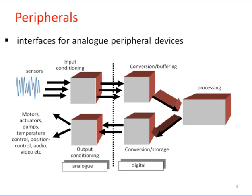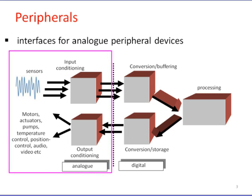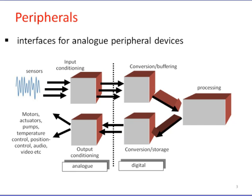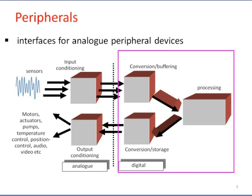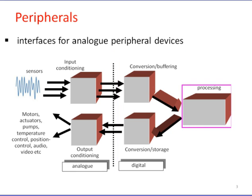Embedded systems receive their inputs from the external world in the form of analog signals whose amplitude varies continuously. Sensors or transducers convert physical entities into electrical signals. The embedded system takes the electrical signal as input and converts it to a digital one, since processors are designed to handle digital signals. The processor then processes these signals using a program that resides in a memory chip.